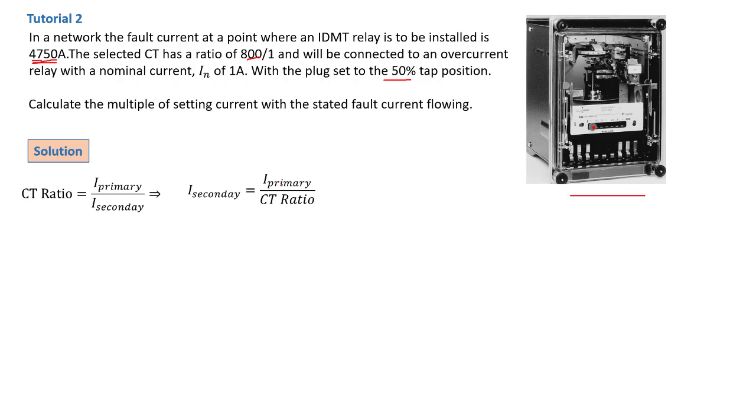That is now the primary current in this case. Then replacing into our formula, we're going to have a secondary current of 5.94 amps. This is now our secondary current.